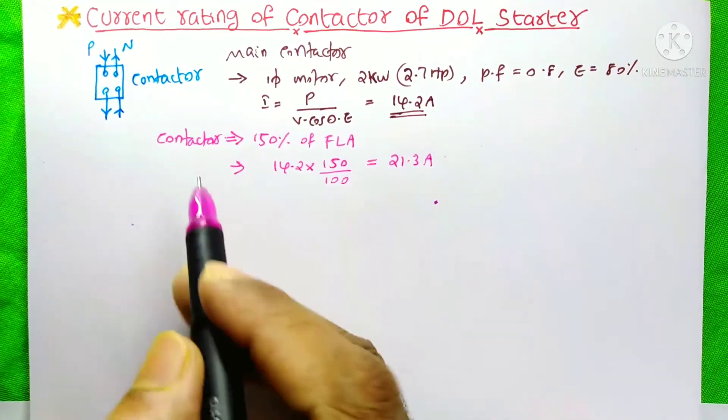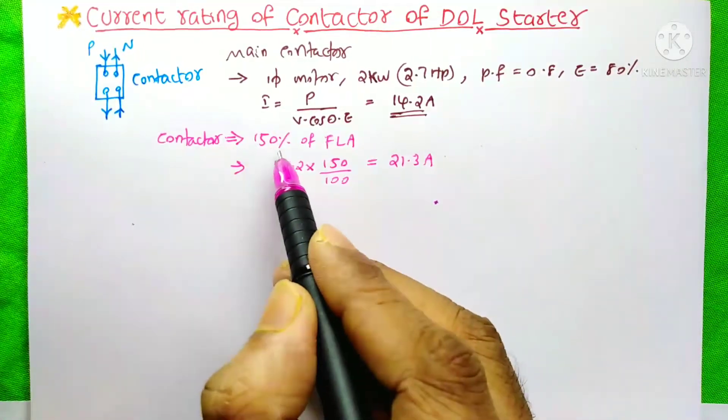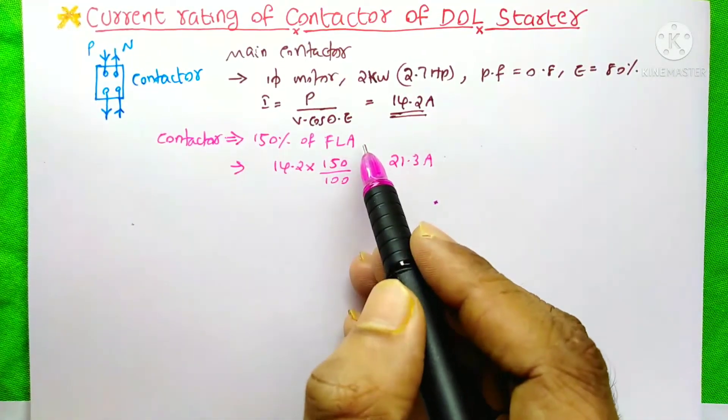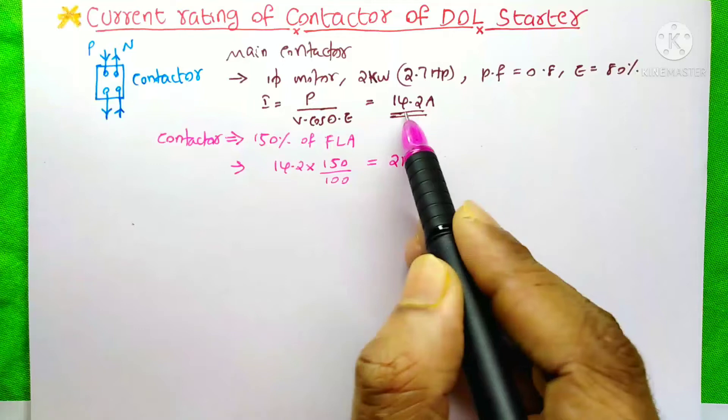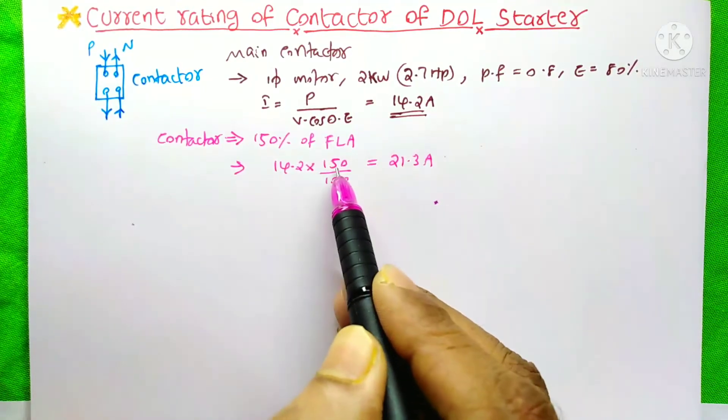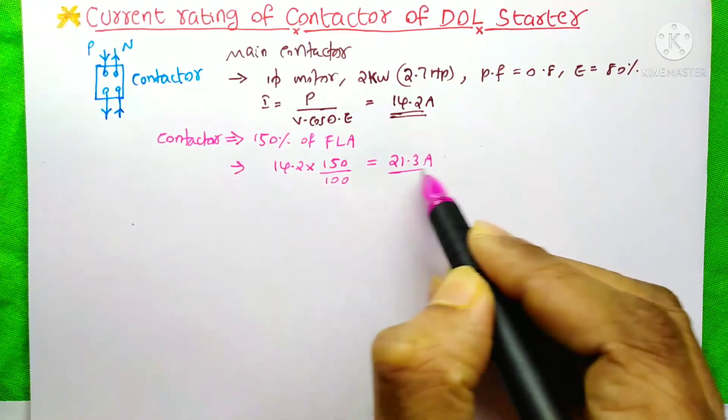You know in industry, the general standard is taking 150% of full load amps. That means our full load amps is this one. So 14.2 times 150%. The answer is 21.3A.